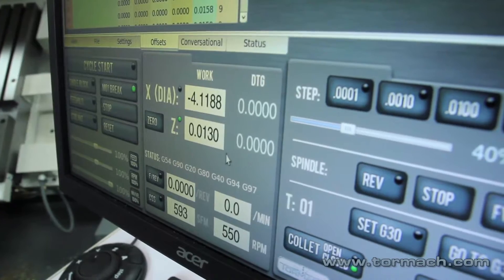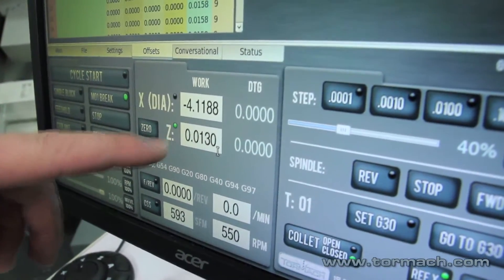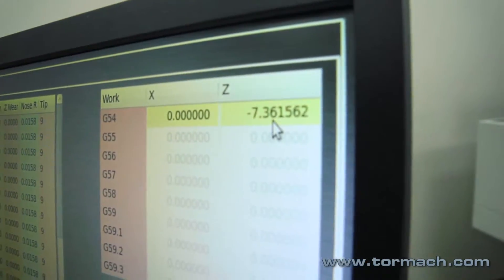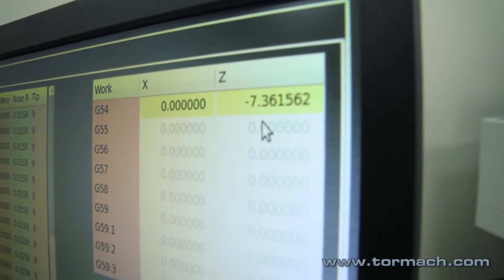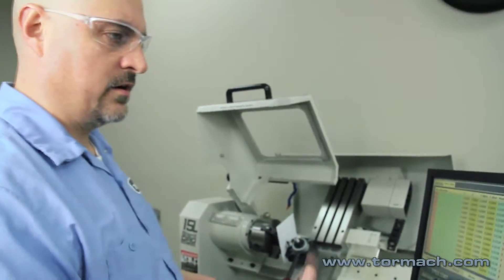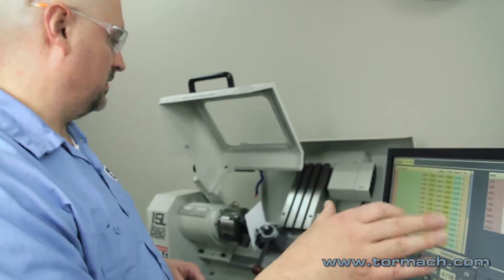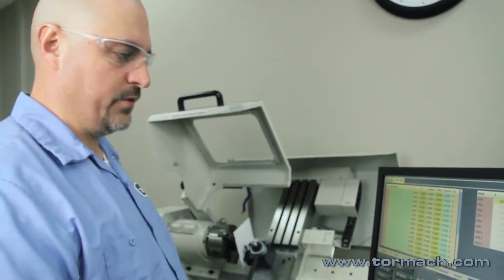So now it tells me our Z-position right now is 13 thou off the face. And if you look up here, it entered a work offset. That's the distance from the machine zero. When you reference the machine, if you zeroed it out there, that's the distance from the limit switch to how far you moved to touch off the face of the part.